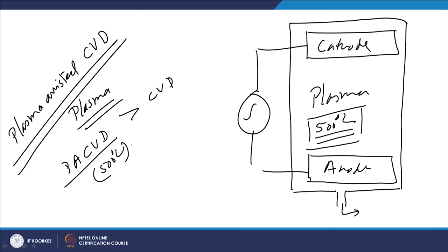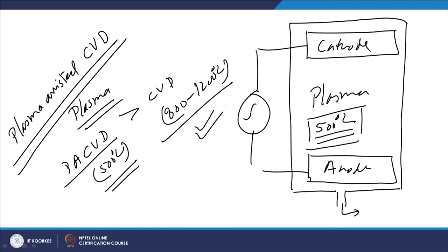The plasma-assisted CVD is performed at 500 degrees centigrade while the conventional one is performed at 1200 degrees centigrade. This higher temperature in conventional CVD adversely affects the substrate properties, whereas the chances for damage and deterioration in mechanical performance of the component in the case of plasma-assisted CVD will be lower.